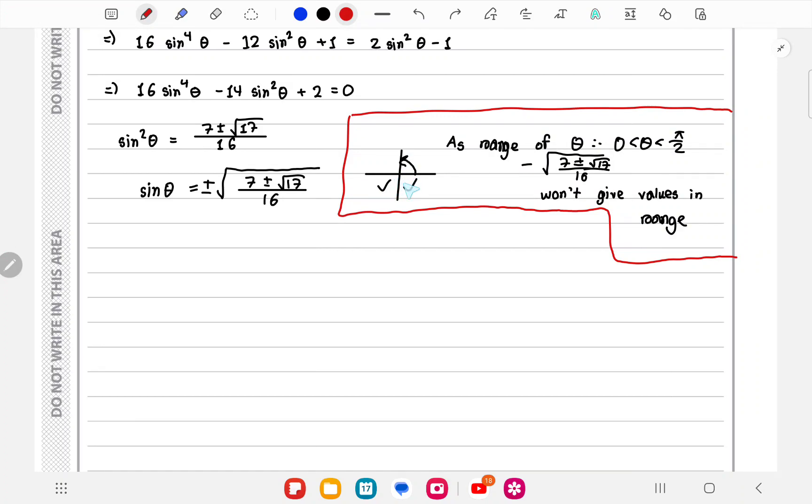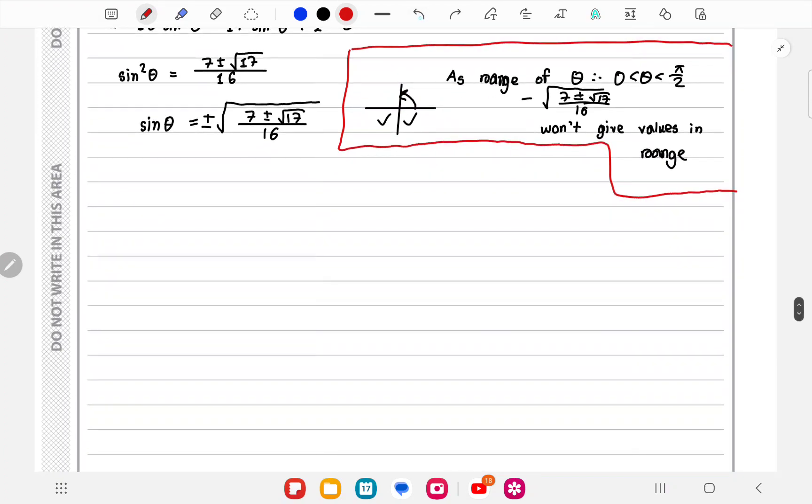However, if it is positive, it's in the first two quadrants and we'll get a value here. So sin θ can either be √[(7 + √17) / 16], which would give us a basic acute angle of 0.9859, or it could be √[(7 - √17) / 16], giving us a basic acute angle of 0.4379.